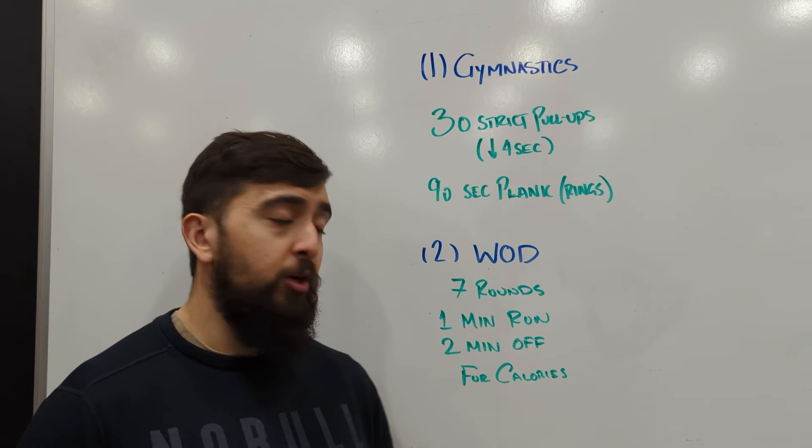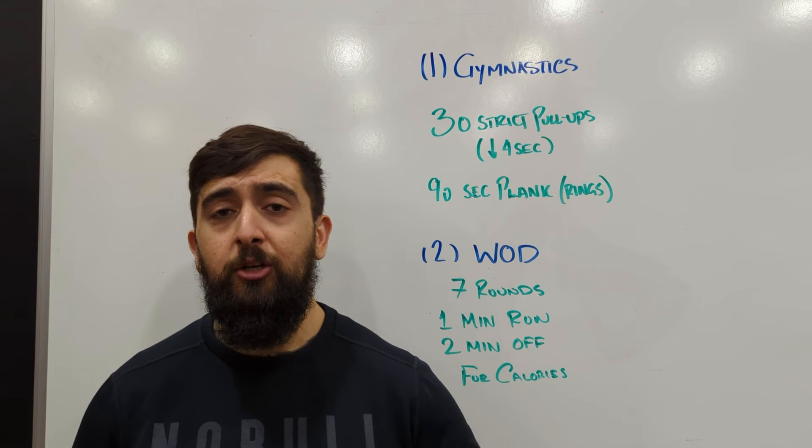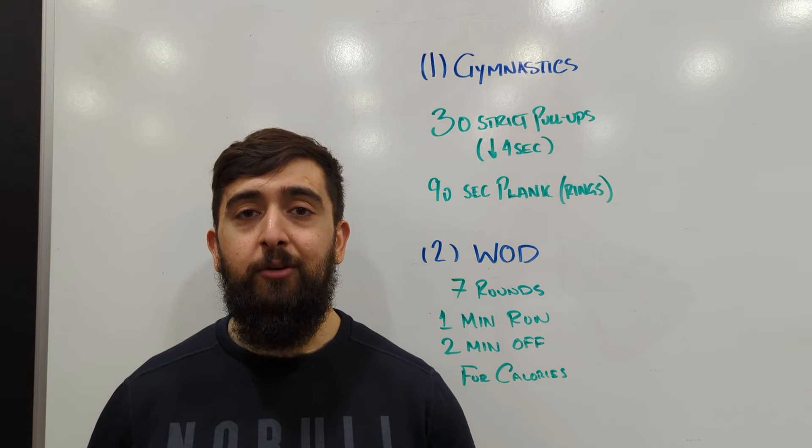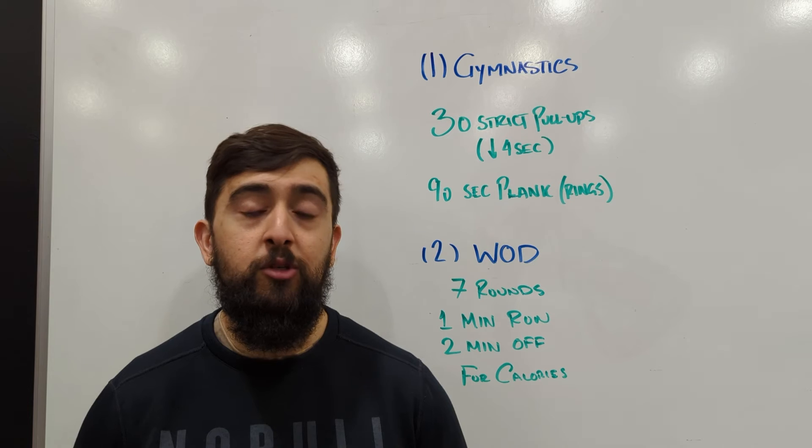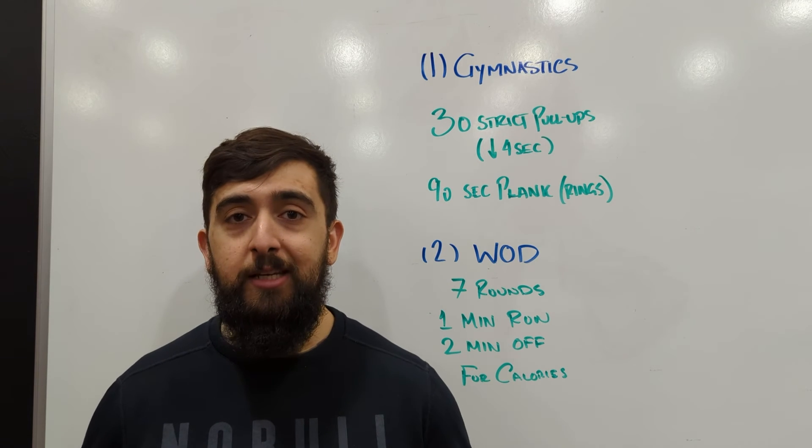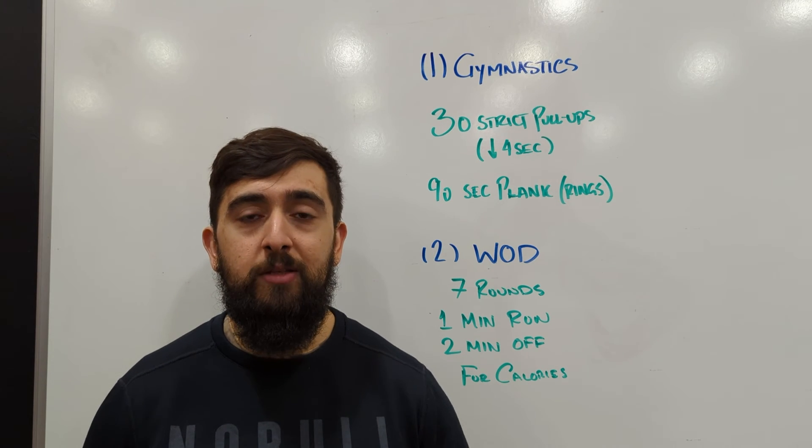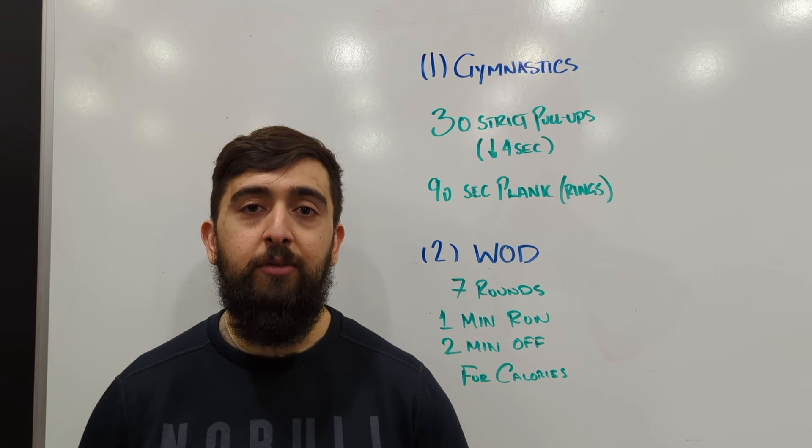This style of workout with that one to two ratio, we want to see you go out at a 90 to 100 percent effort on that interval each time. So it's not just an easy pace on the one minute and then two minutes off. Work for that two minutes off each time.